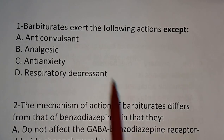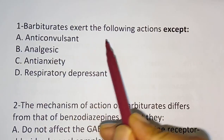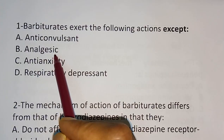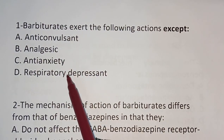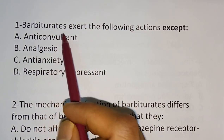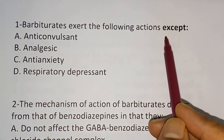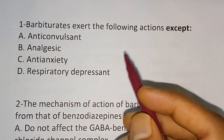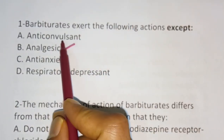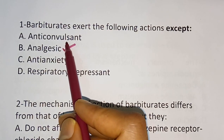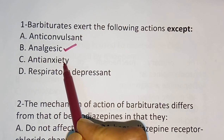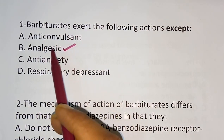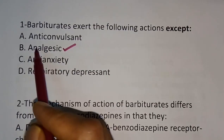The first question: barbiturates have all of the following actions except. Options are: A) anticonvulsant, B) analgesic, C) anti-anxiety, D) respiratory depressant. The correct answer is option B, analgesic. Barbiturates have anticonvulsant action — phenobarbitone is used for that purpose — and anti-anxiety action is also there, and respiratory depressant action is also there. So option B is the exceptional case.